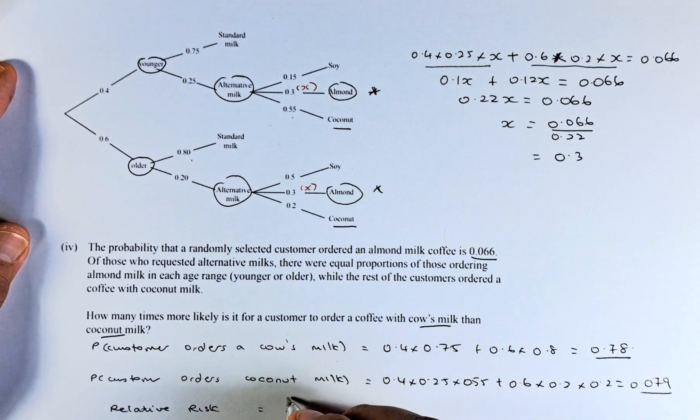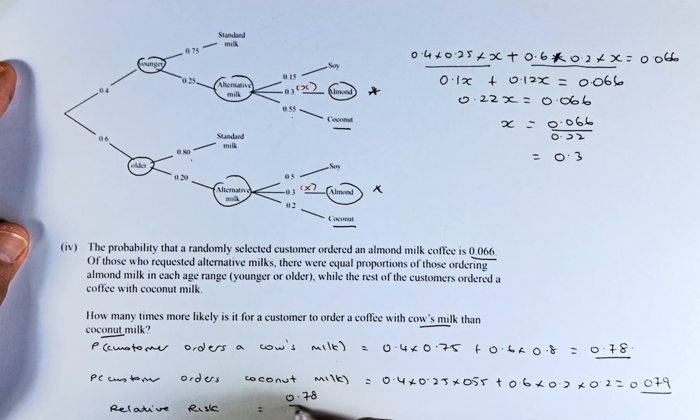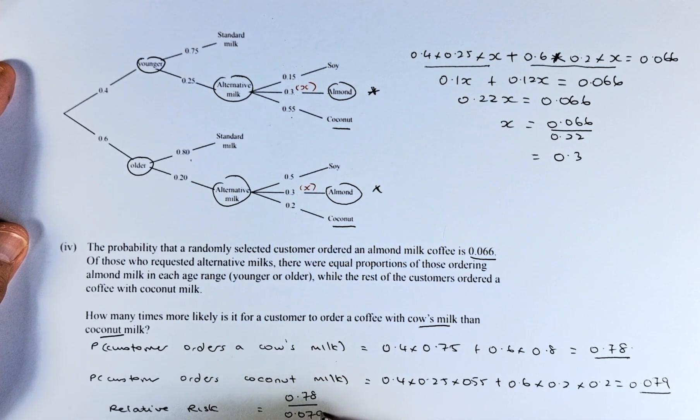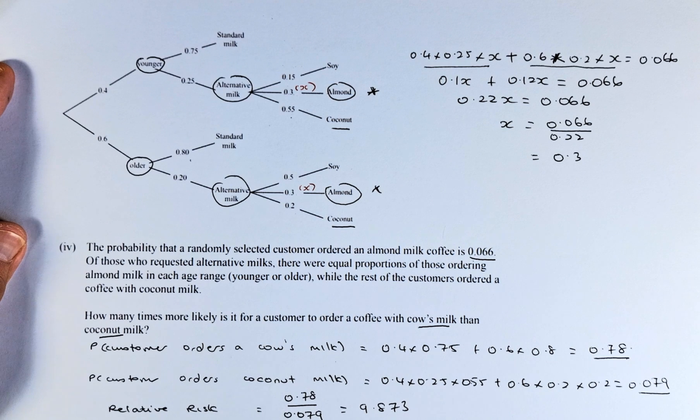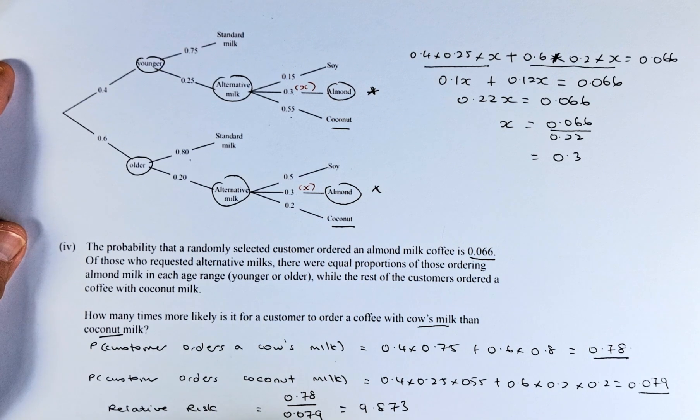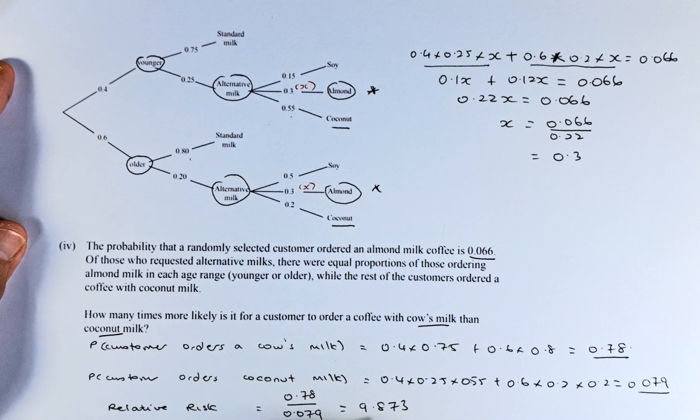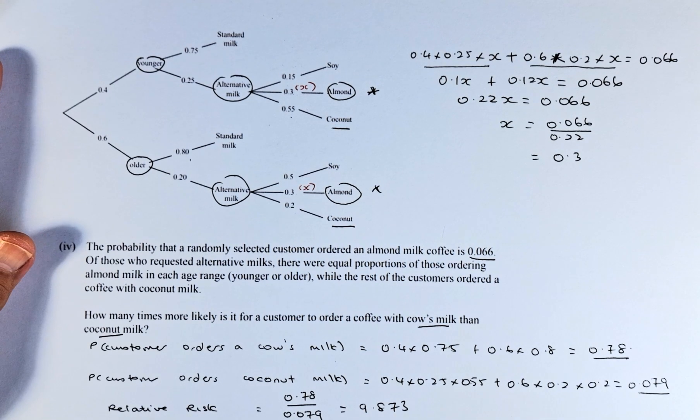this number divided by that number. So it's going to be 0.78 divided by 0.079 is going to get the answer of 9.873. So in your answer, customers are close to 9.873 times more likely to order cow's milk than the coconut milk.